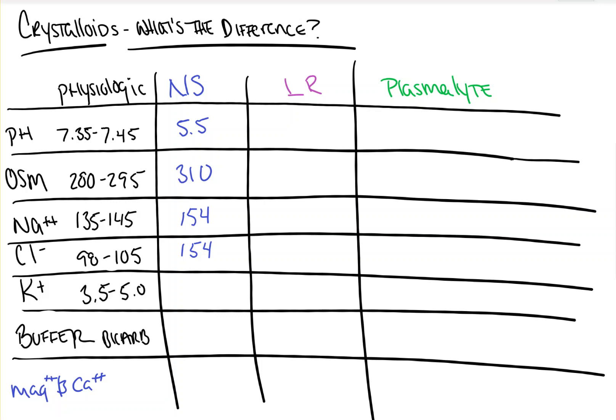It has a pH of 6.5, which is more physiologically normal than NS. It has an osmolality of 273,